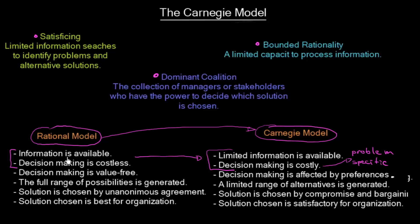Under the rational model, decision making was value-free, meaning it is not affected by any individual or personal preferences. However, under the Carnegie model, decision making is affected by preferences. Imagine five managers making a decision — all of them have had different experiences, some negative and some positive. These experiences result in different preferences, and of course each manager will have different preferences, so decision making is affected by this.